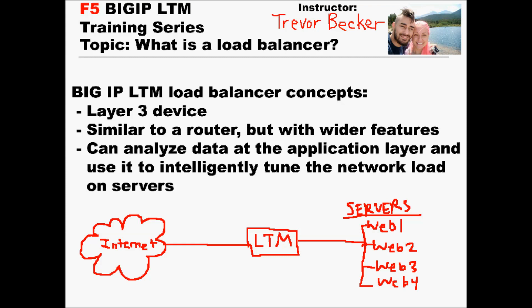This is where a router stops — it doesn't process anything beyond that. That's the only thing it does. The Big IP LTM system, though, can analyze payloads and data at the application layer, and it can actually use that data to intelligently tune the load on the networking servers behind it.